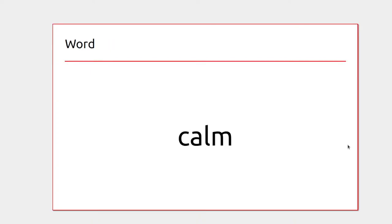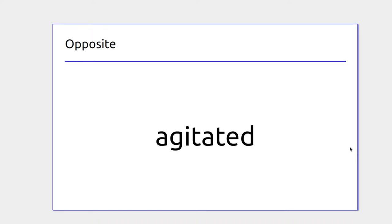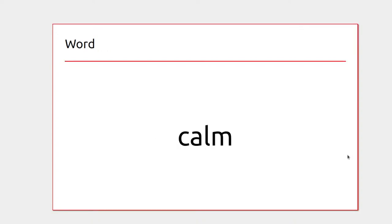A person who's calm is relaxed and looks like everything's in control. Someone who's agitated might be running on a tight schedule — if they're late for an important meeting they might be getting a bit upset. But if someone's well ahead of time and easily going to make their meeting, they'll be calm.